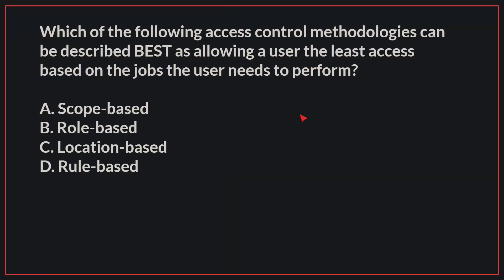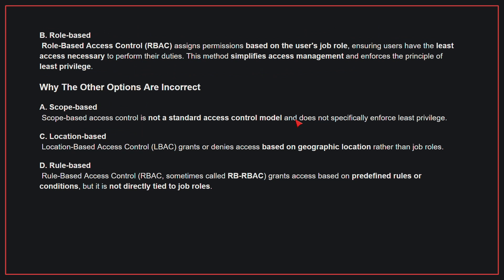Which of the following access control methodologies can be best described as allowing a user the least access based on the jobs the user needs to perform? The correct answer is B: Role-based. Role-based access control assigns permissions based on the user's job role, ensuring users have the least access necessary to perform their duties. This method simplifies access management and enforces the principle of least privilege.